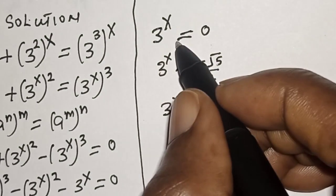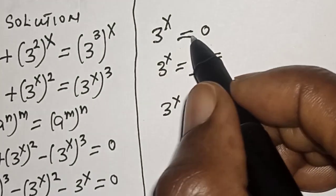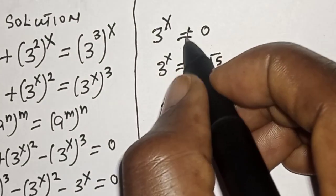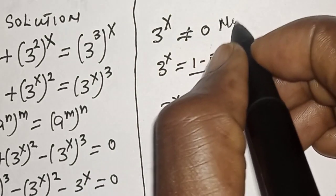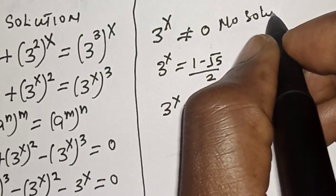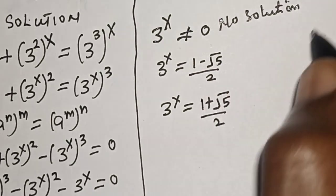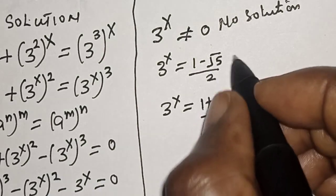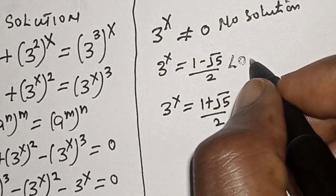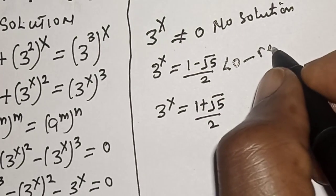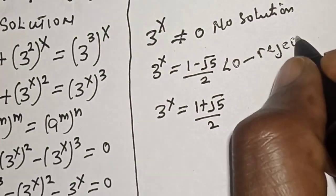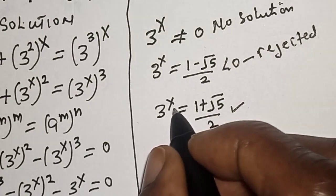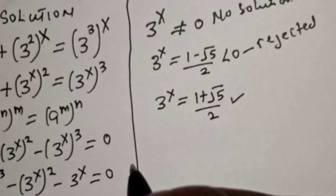Since we are asked to find the value of s: T raised to power s cannot equal 0, so that case has no solution and is rejected. Also, T raised to power s equal to 1 minus root 5 over 2 is less than 0 and is also rejected. So the only valid solution is T raised to power s equal to 1 plus root 5 over 2.